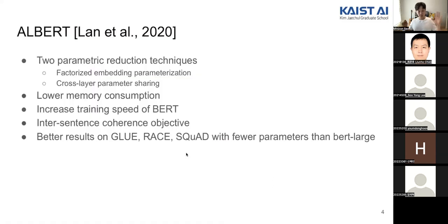Everyone remembers what BERT looked like. After BERT was released, there were a few directions people worked on. One of them is how to reduce the complexity of BERT — how can we make BERT faster and also more lightweight? One approach was trying to reduce parameters by having some sort of factorization, using bottleneck layers that replace fully connected layers to reduce parameter count.